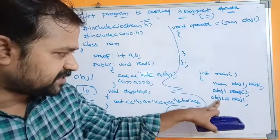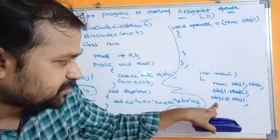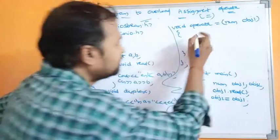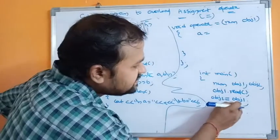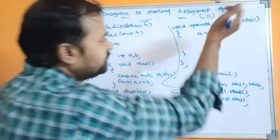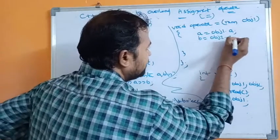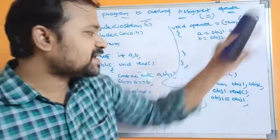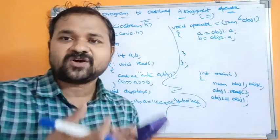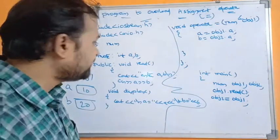Here, obj2 is the invoking object — the calling object. We can access obj2's content directly in the operator function, so without using the obj2 name we can access the variables a and b. So a = obj1.a. Here we can also use a reference variable. The advantage of a reference variable is that if you perform any modification on it, that modification will be reflected in the original variable as well.